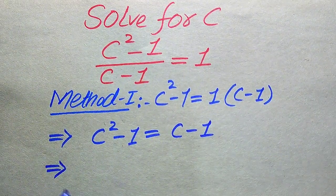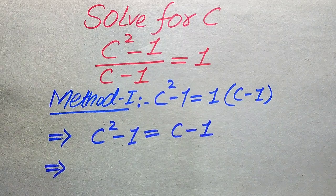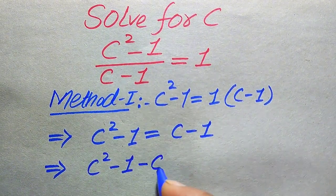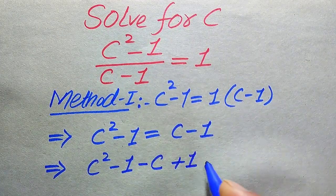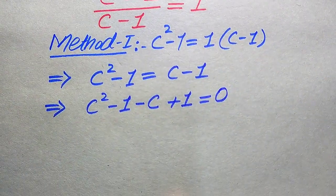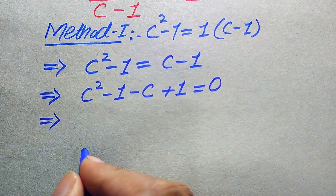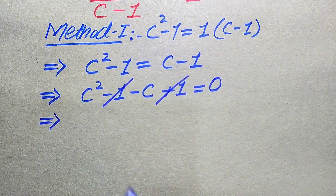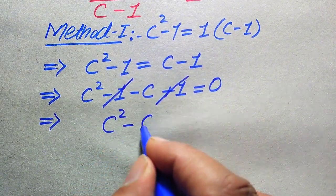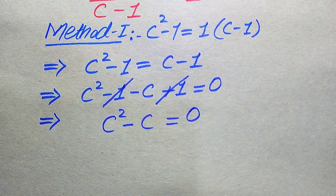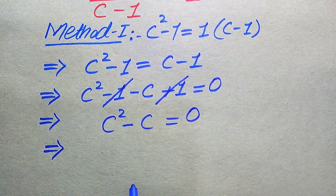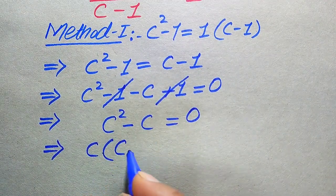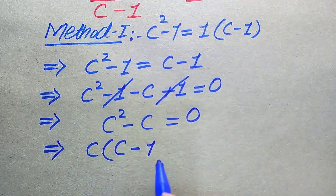Next, we move all terms from the right-hand side to the left-hand side. The c term is positive, so it becomes negative on the left; the -1 term is negative, so it becomes positive. This gives c² - 1 - c + 1 = 0. The +1 and -1 cancel, leaving c² - c = 0. Both terms involve c, so we factor out c to get c(c - 1) = 0.